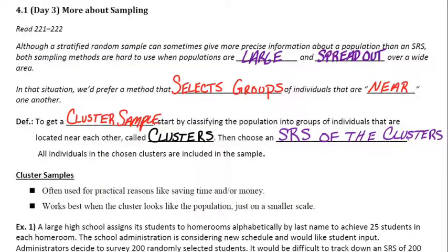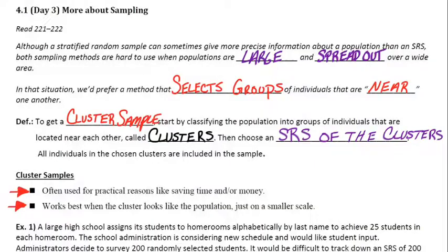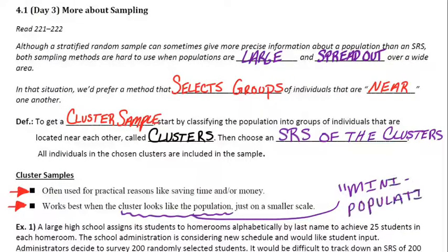Why would we use a cluster sample, where we randomly select groups of people and everyone in those groups is part of our sample? First, it's often used for practical reasons like saving time or money. Second, it works best when clusters look like the population on a smaller scale — like little mini populations — which gives a good representative sample of the whole population.